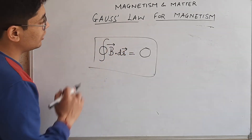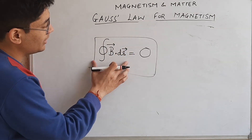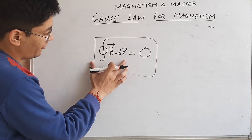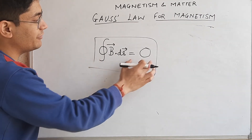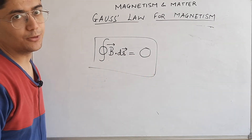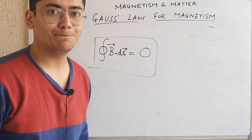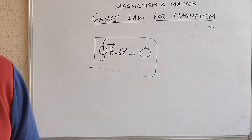So this is the Gauss Law for Magnetism: the magnetic flux through a closed surface of a magnetic field is always zero. Take care.